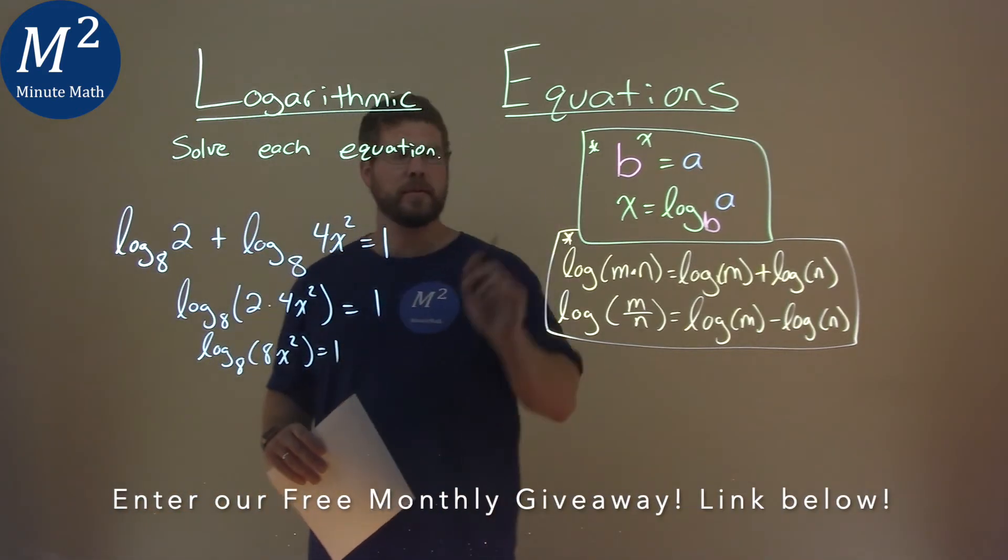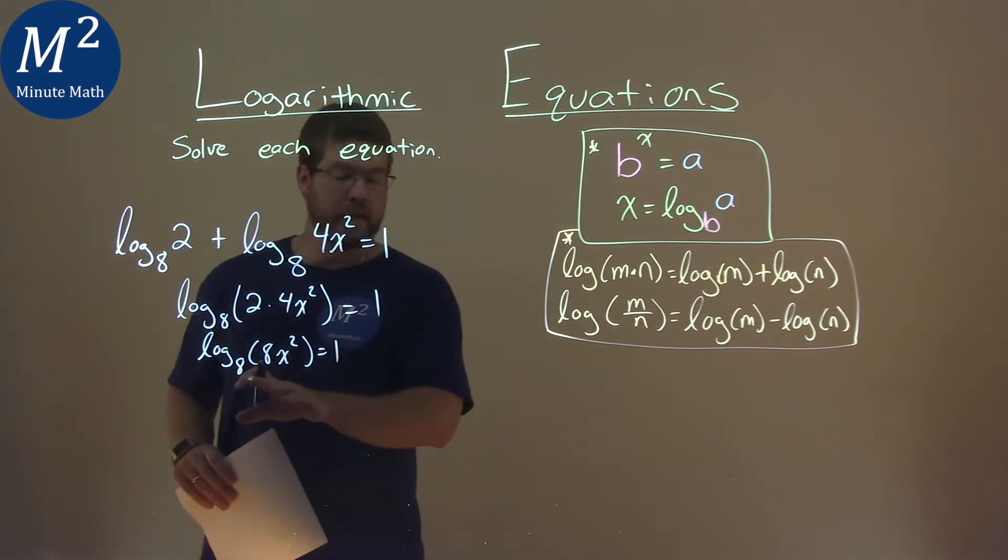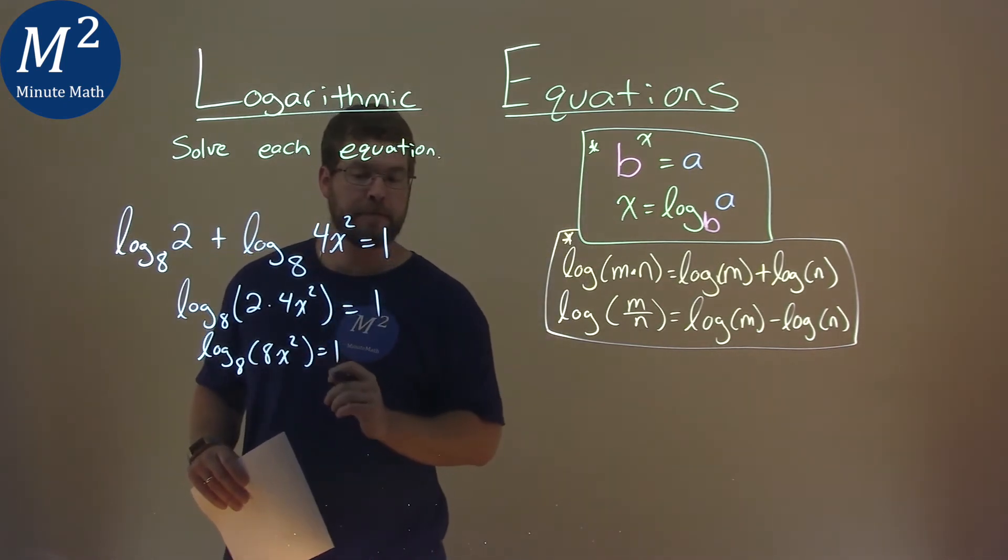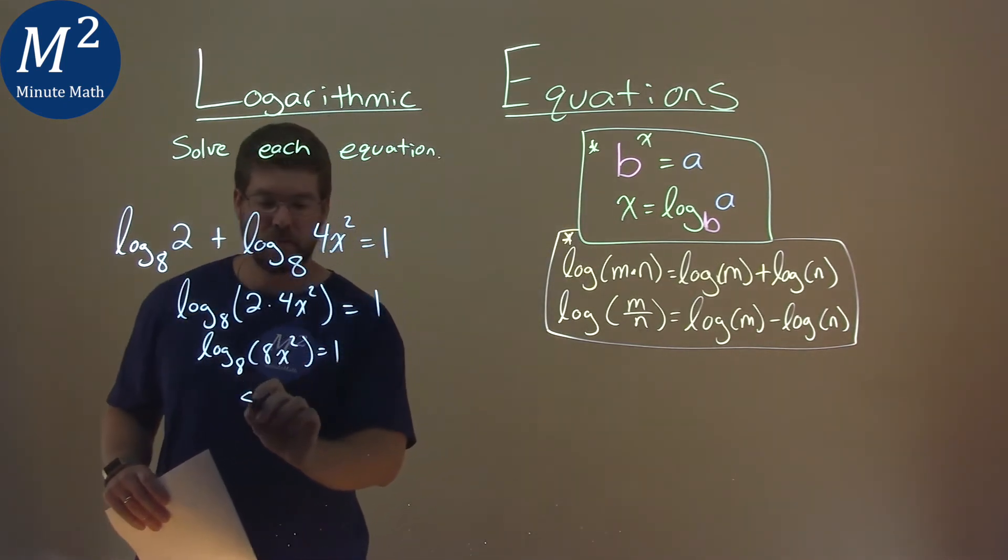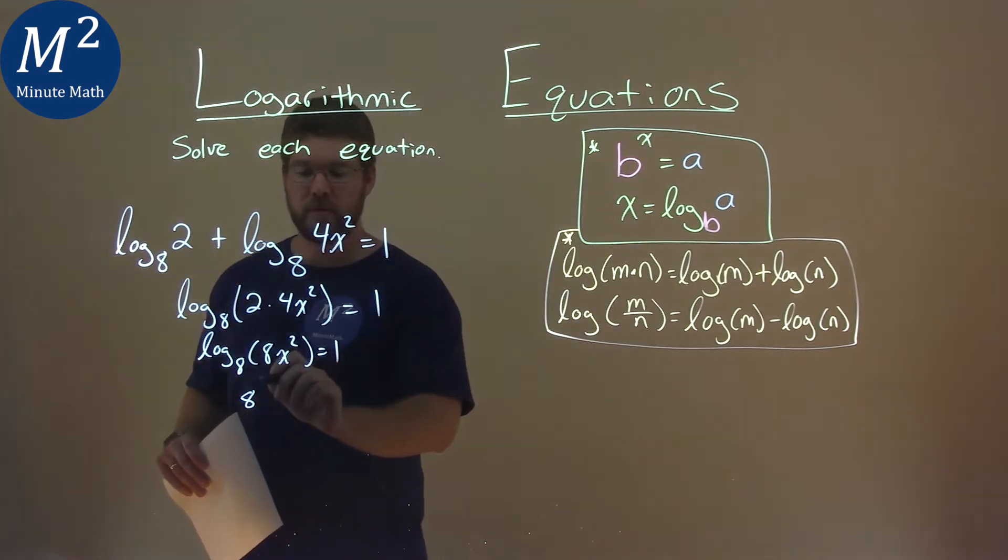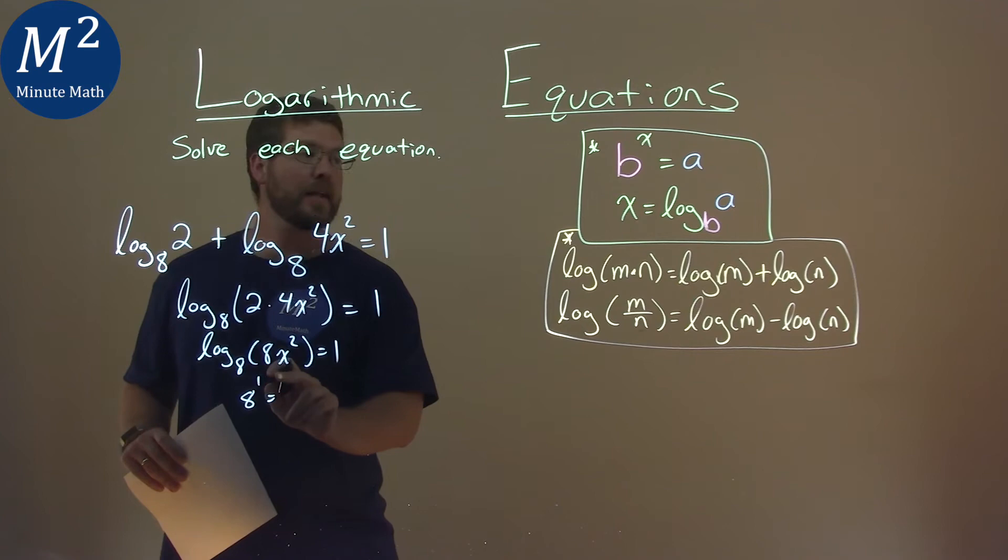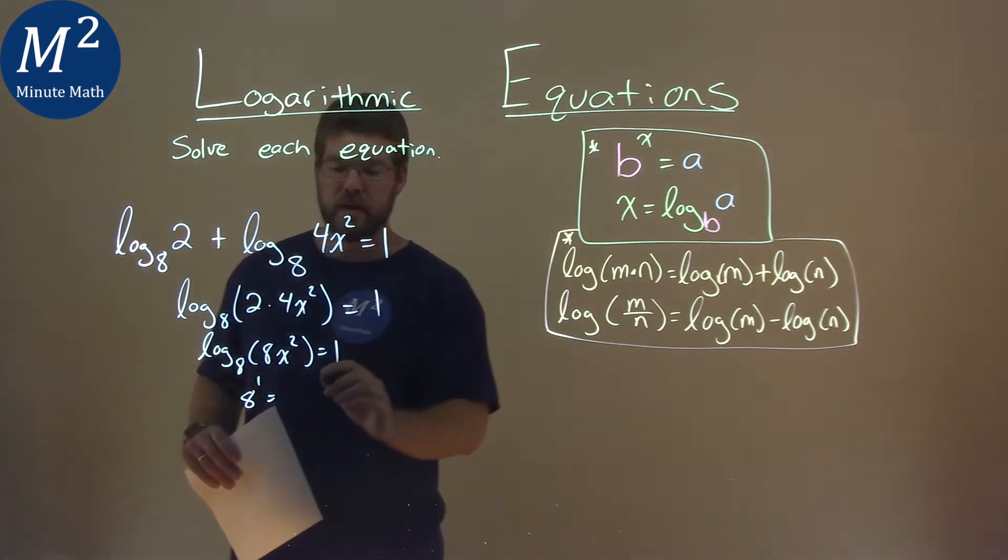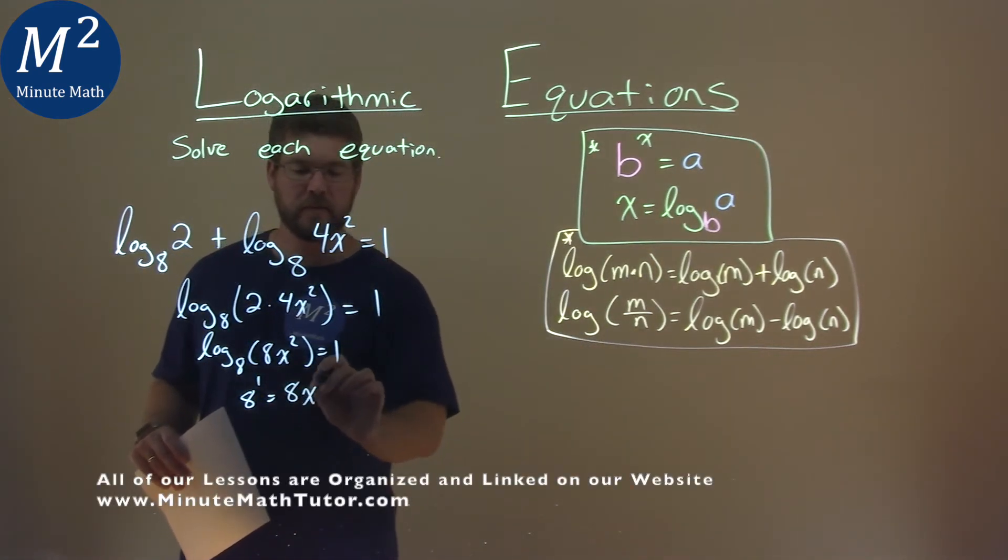We now use our top formula. We're given this form here, and we can rewrite it into the top part right there. So our base is 8 and it's raised to the power what it's equal to—just the first power right there—and that's going to be equal to what we call our a value, which is what's inside the logarithm, which is 8x squared.